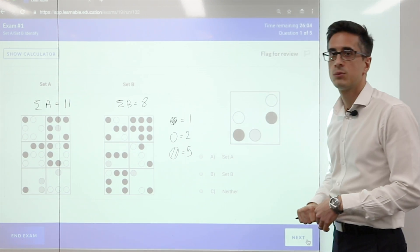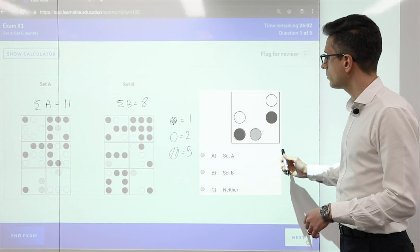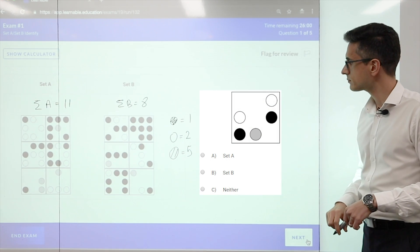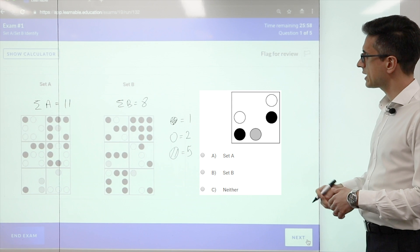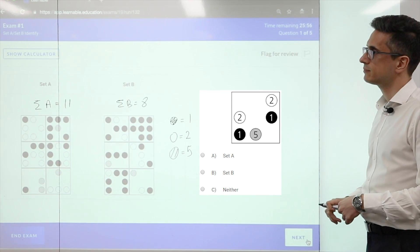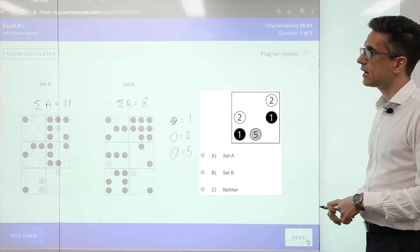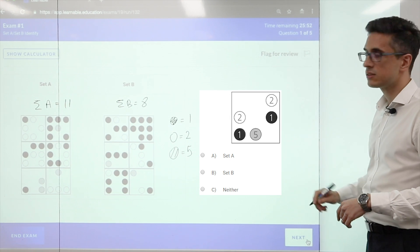Now that we understand the rules for both set A and set B, we can look at answering the questions. So this first question, we can add up all the shapes, and the total is 11, so it belongs to set A.